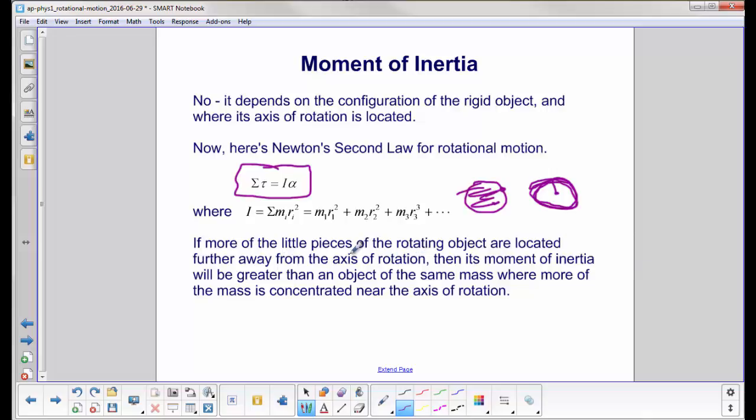Let's look at this sentence. More of the little pieces of the rotating object are located further away from the axis of rotation. So here's your axis of rotation here. Here it is right in the middle here.